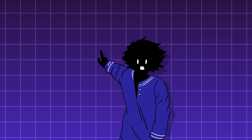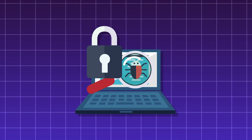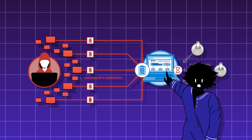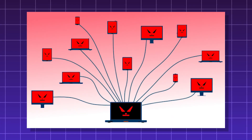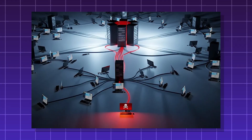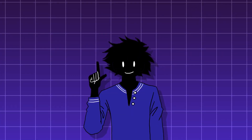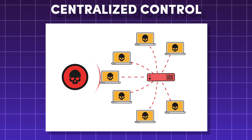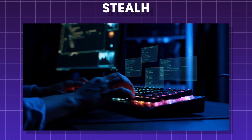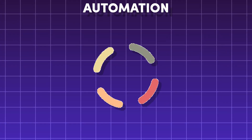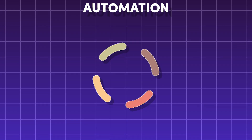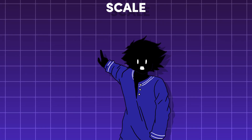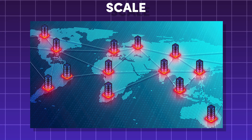Botnet. A really dangerous type of attack, as it's not just one system infected with malicious software, but an entire network of computers under the control of one user, usually without the owner's knowledge. Each computer essentially acts like a zombie controlled by something called the command and control server. Key characteristics of a botnet are centralized control — a single bot herder or bot master can control thousands of devices to act in unison — stealth, automation, and scale. The power comes from its sheer size: what one computer can't do, an army of thousands can do easily.